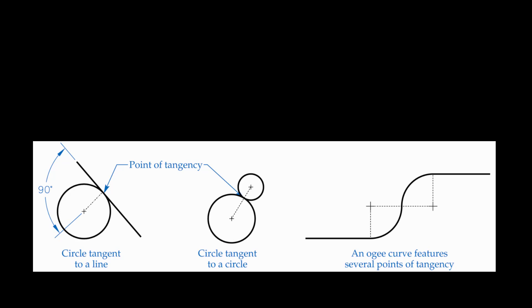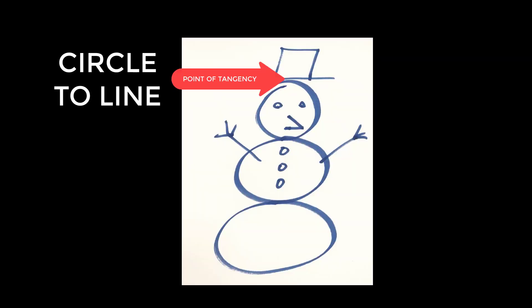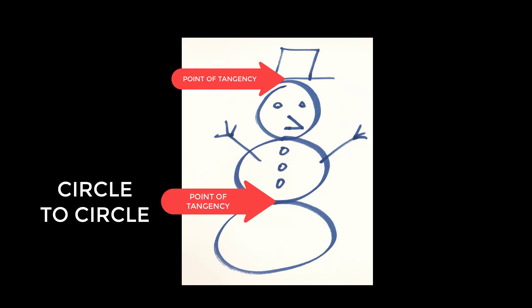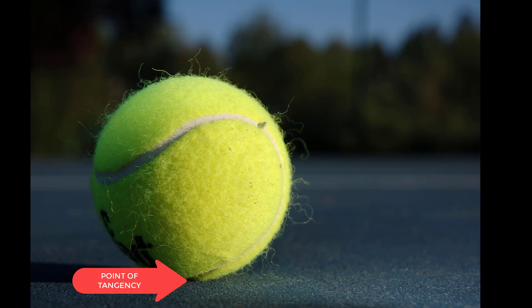So think about a snowman, right? A perfect snowman. The top ball would be on top of the bottom one and they'd only share one point. In addition, three-dimensional shapes can have tangencies. Think about a tennis ball on the ground. A perfect tennis ball would only be touching the ground at one point.